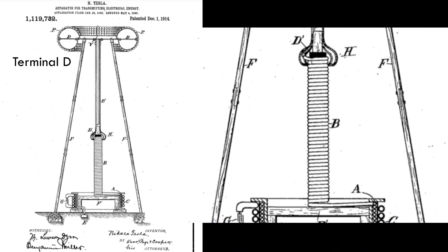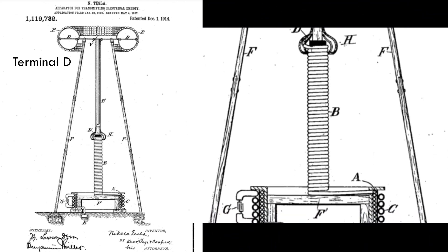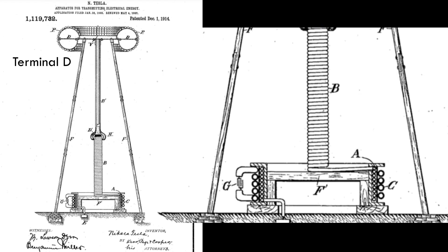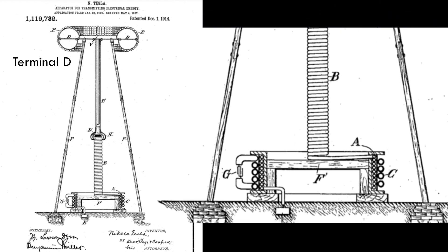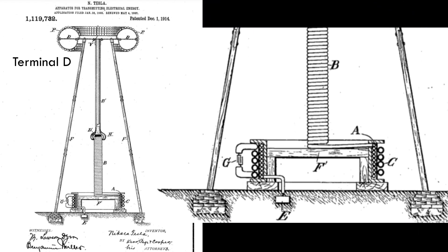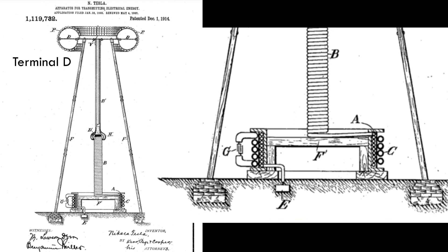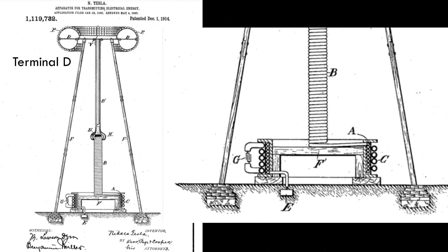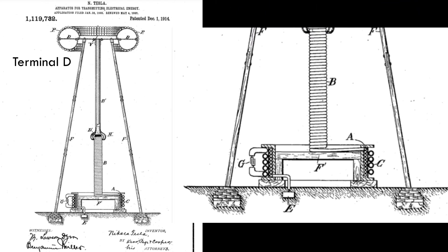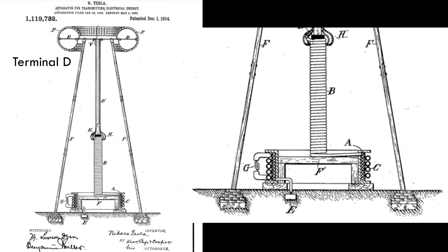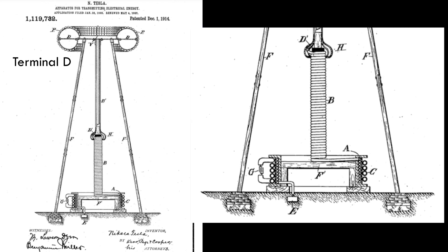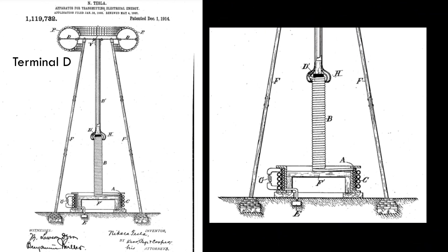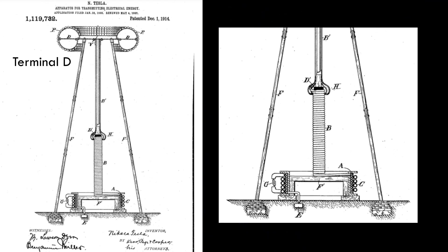A part of the improvements which form the subject of this specification, the transmitting circuit in its general features, is identical with that described and claimed in my original patents, numbers 645576 and 649621. The circuit comprises a coil A, which is in close inductive relation with a primary C, and one end of which is connected to a ground plate E, while its other end is led through a separate self-induction coil B and a metallic cylinder B' to the terminal D.